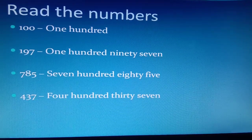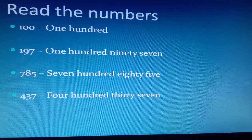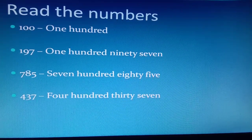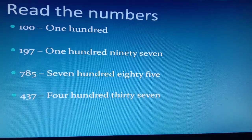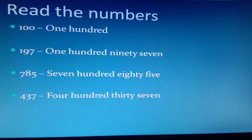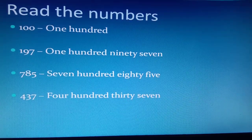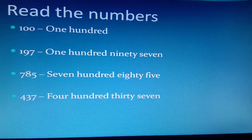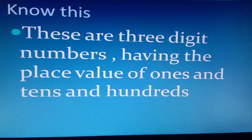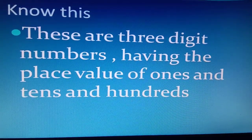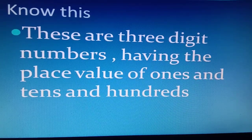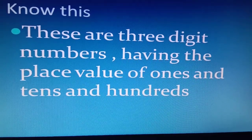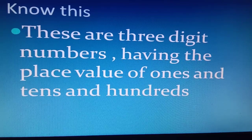Read the numbers: 100, 197, 785, 437. Know this — these are three digit numbers having place value of ones, tens, and hundreds.